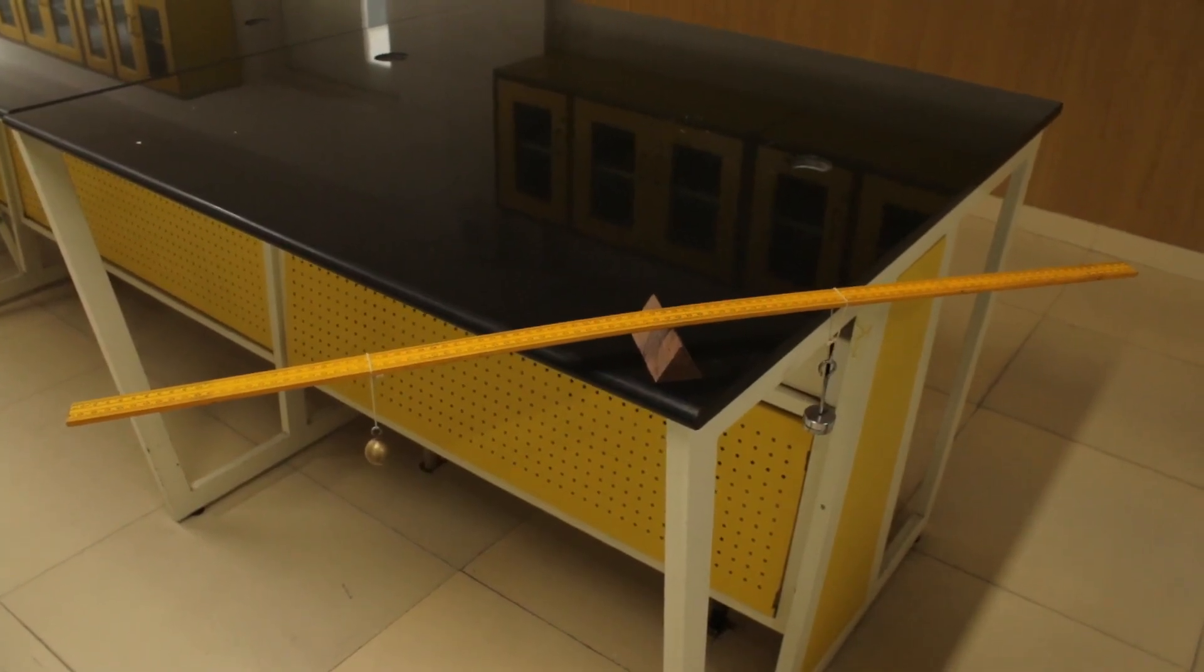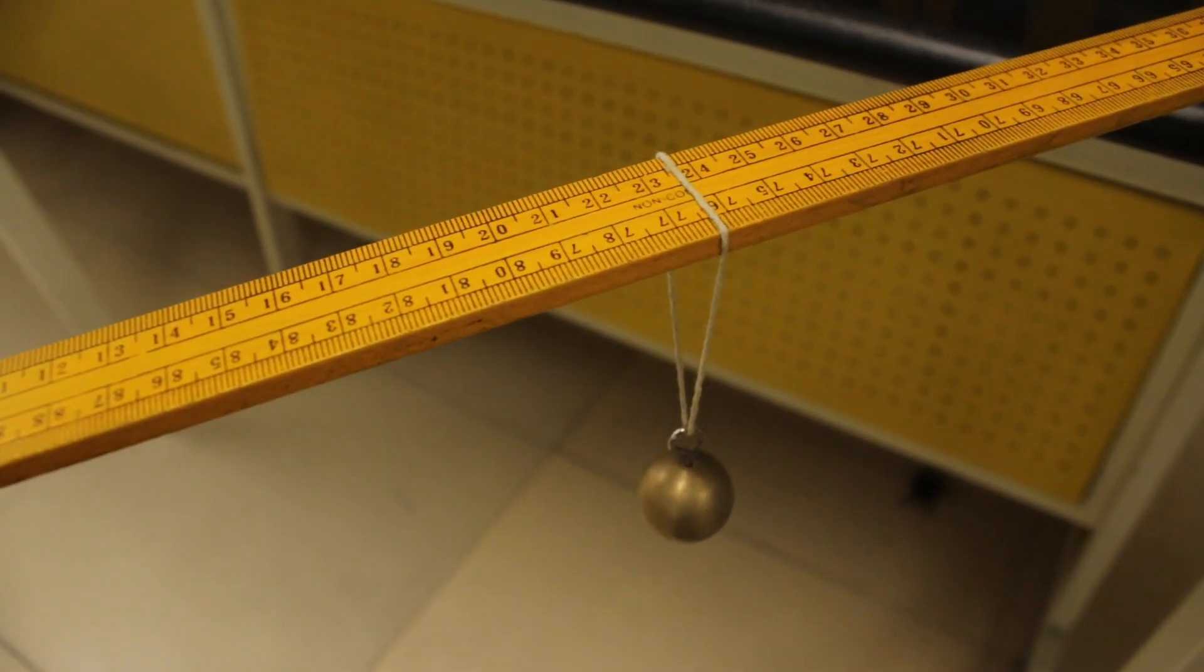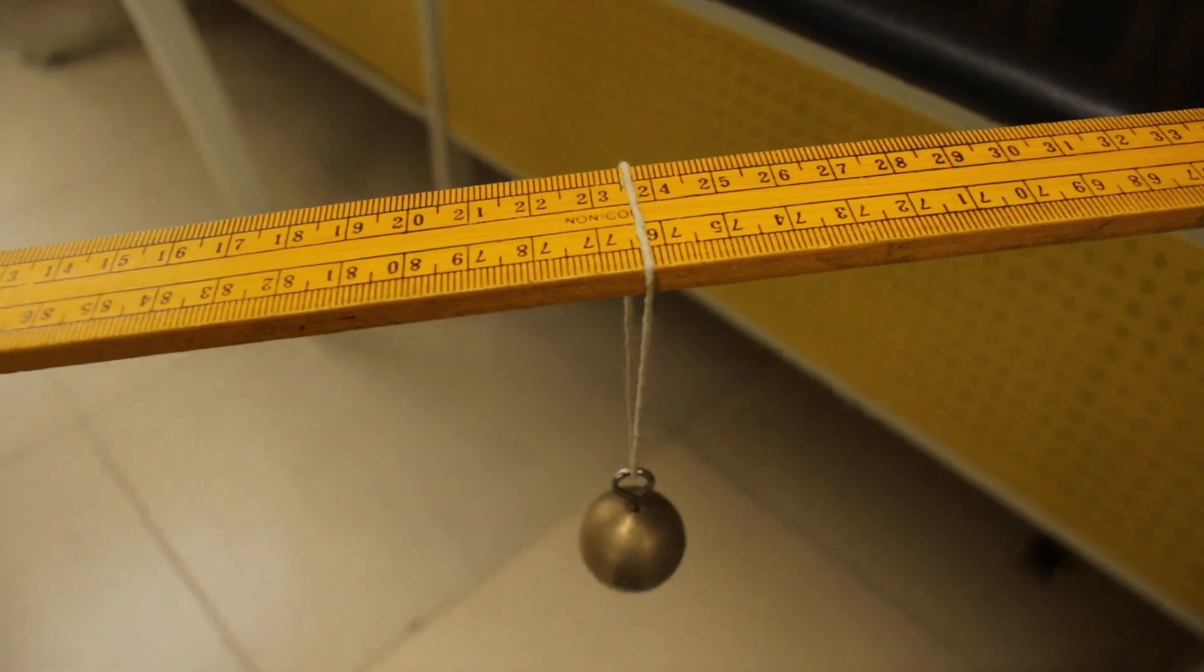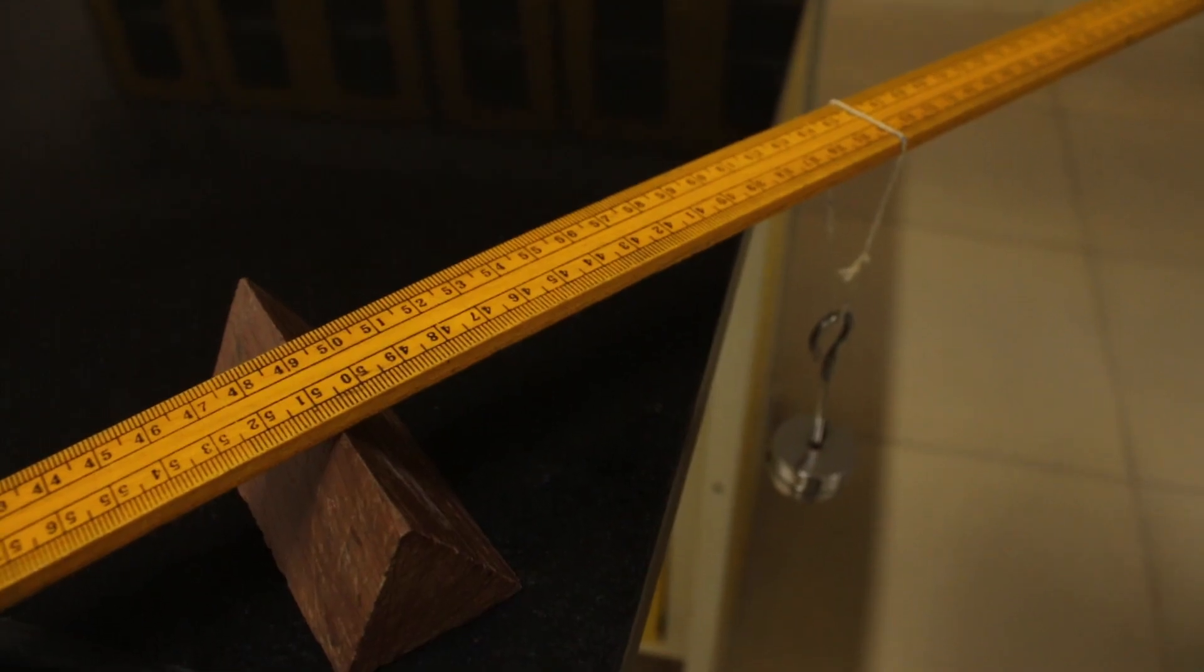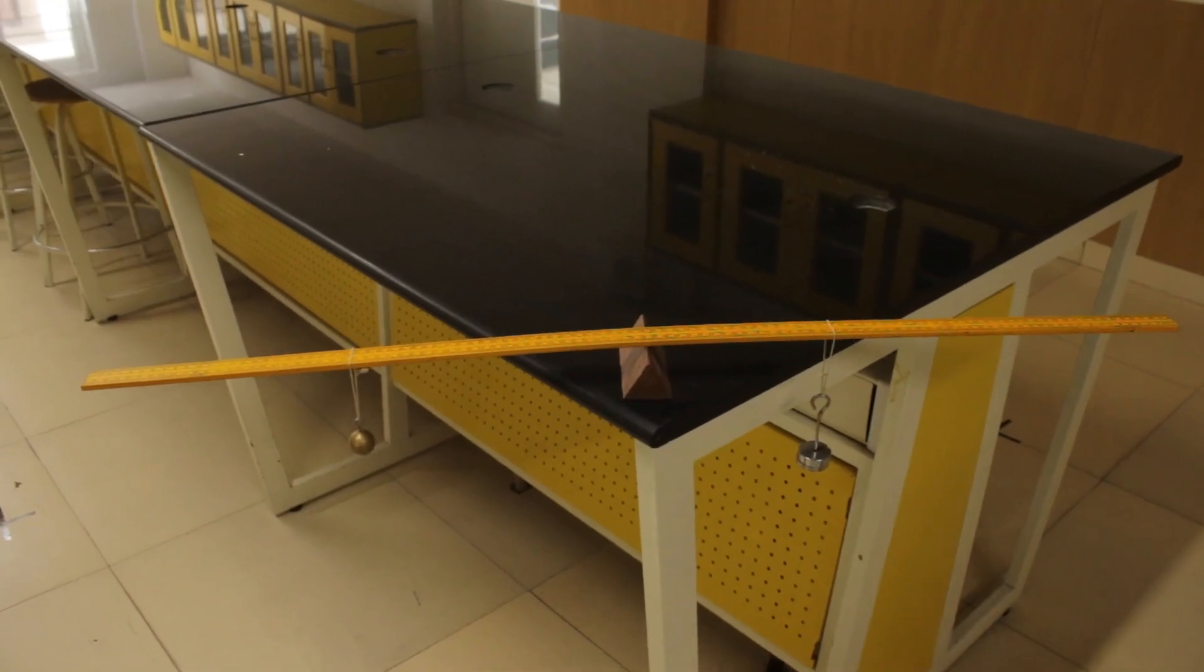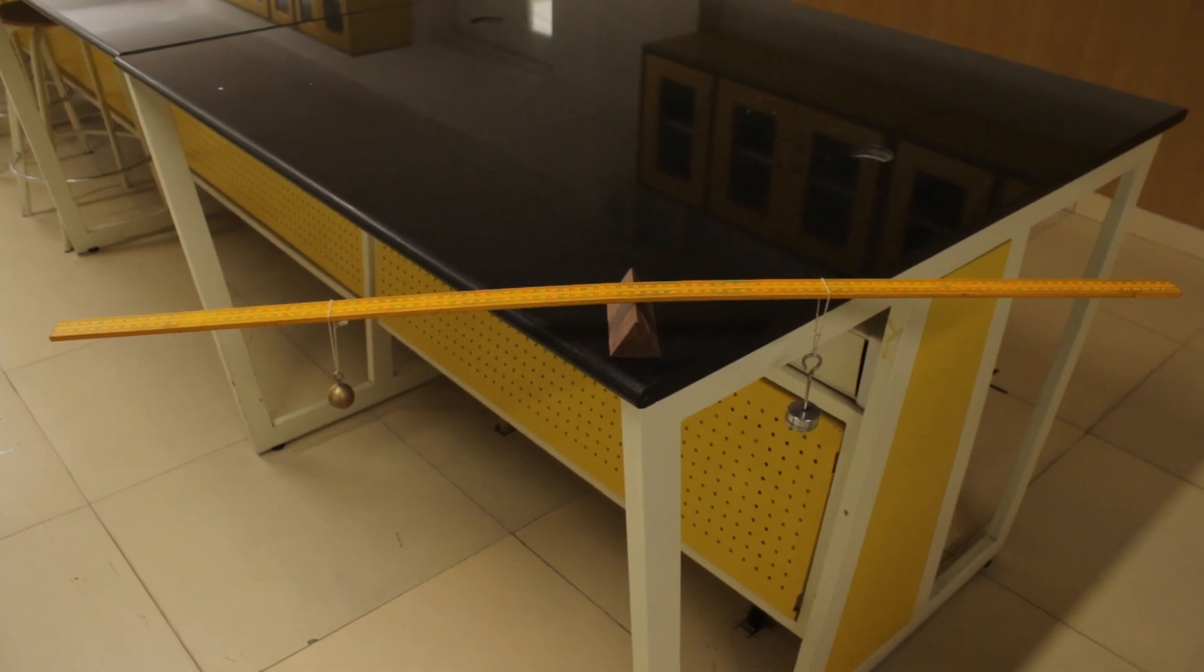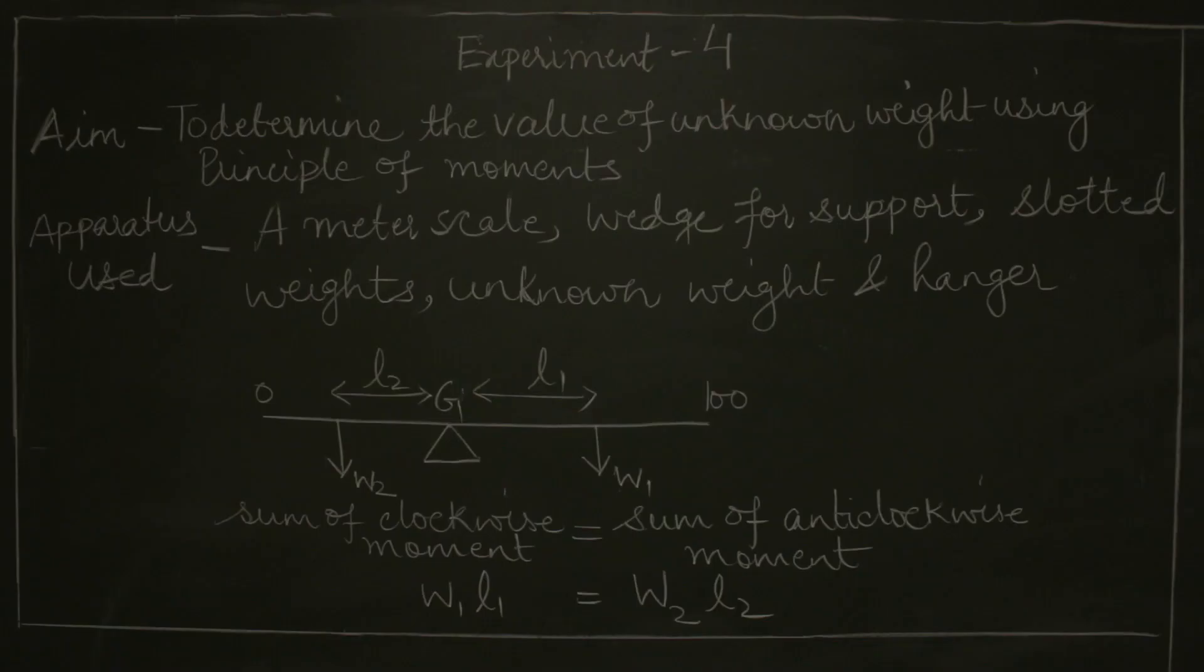That means the condition of equilibrium is achieved. Next, we will note down the position of the weights hanging on the scale as well as their distance from the fulcrum. We will put the values in the equation of principle of moments to find the unknown weight.